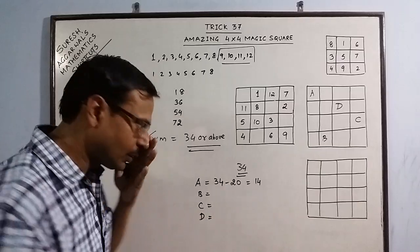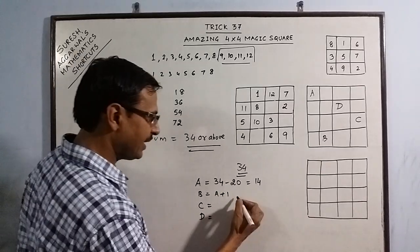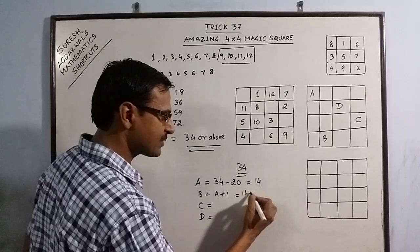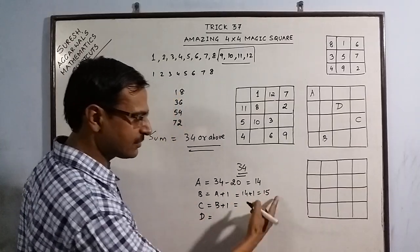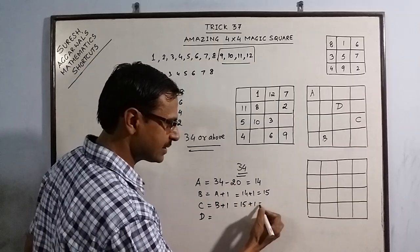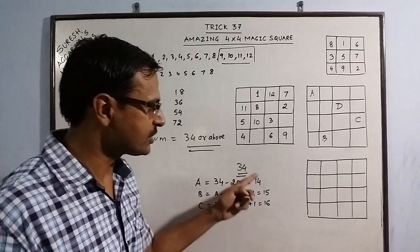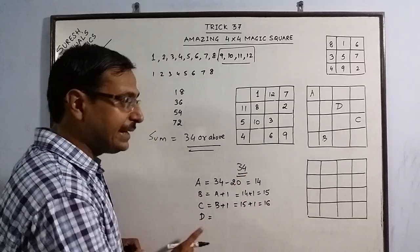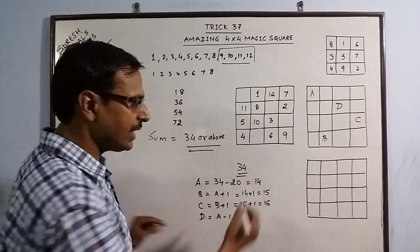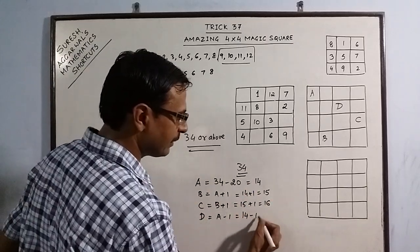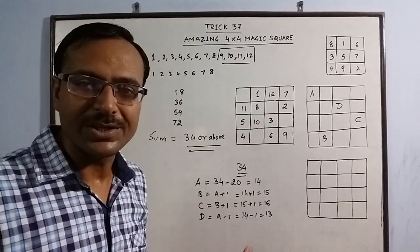B and C are very easy. What you do is, this is A plus 1. A is 14, so 14 plus 1 is 15. C is B plus 1. B is 15, so 15 plus 1 is 16. So, these 3 numbers will come in succession, consecutive numbers. And D will be A minus 1, 1 less than A. So, A is 14 here, so 14 minus 1 is 13.